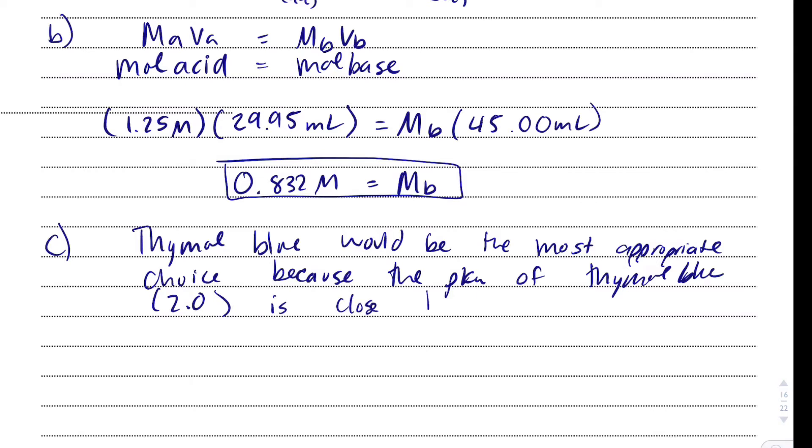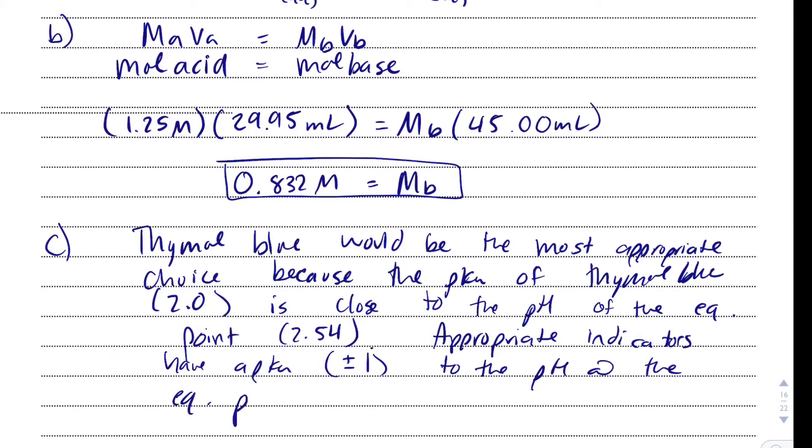So I'm going to say thymol blue would be the most appropriate choice because the pKa of thymol blue, which is 2.0, is close to the pH of the equivalence point. So if the pKa of thymol blue is equal to the pKa, which is going to be plus or minus 1, chances are you're not going to get it exact to the pH at the equivalence point. So color change happens at the right time.